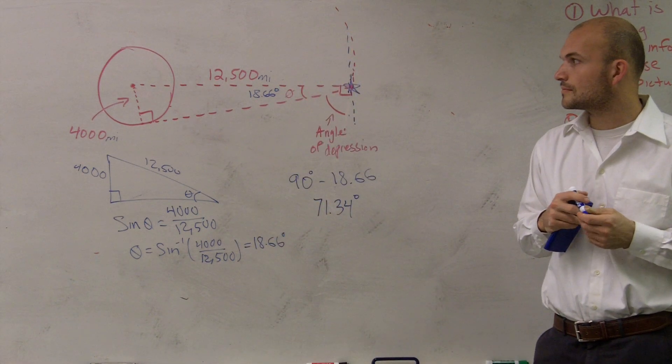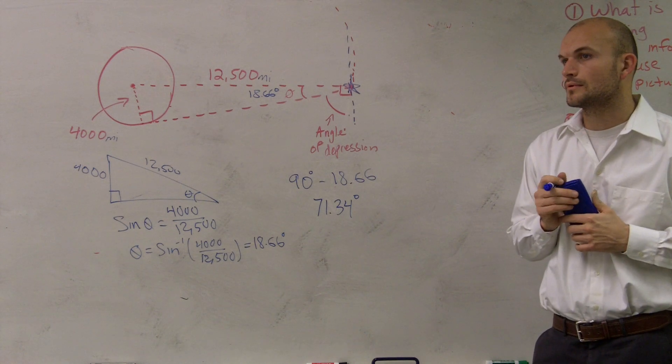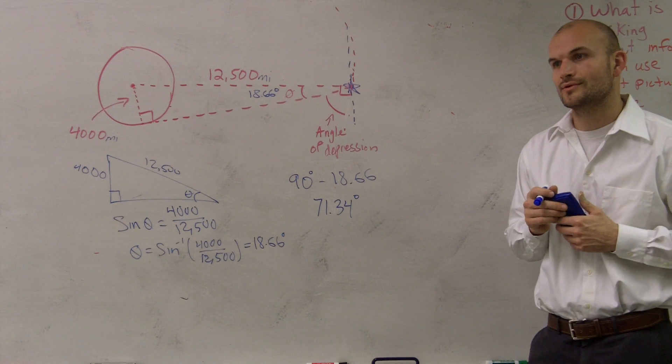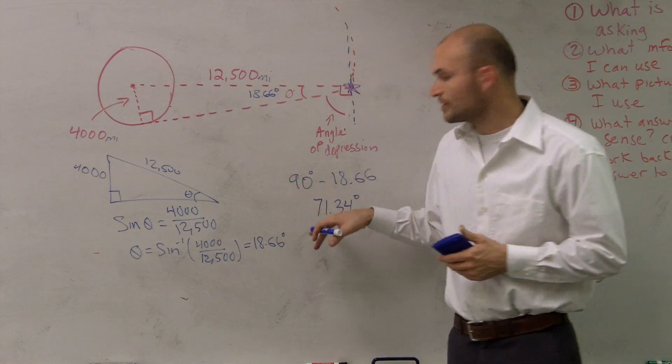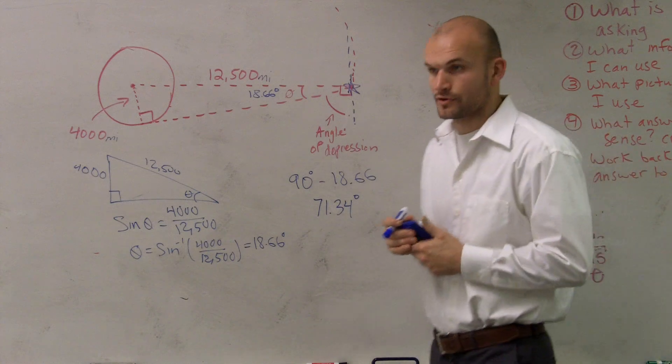Yeah, there's multiple ways you can go and work there. That's the beauty of your trig properties, is you can do it multiple different ways. But therefore, your angle should have been 71.34 degrees.